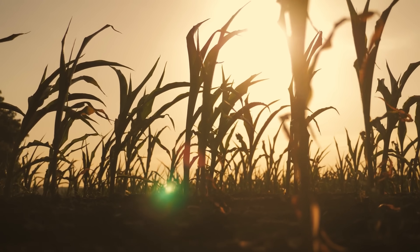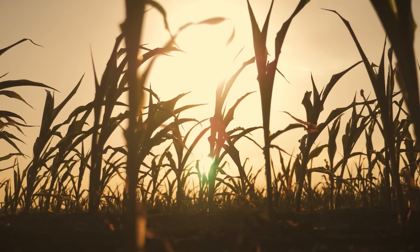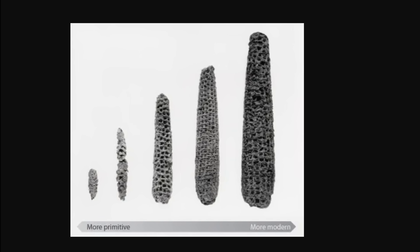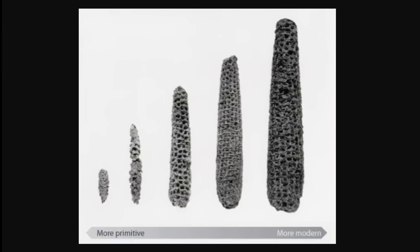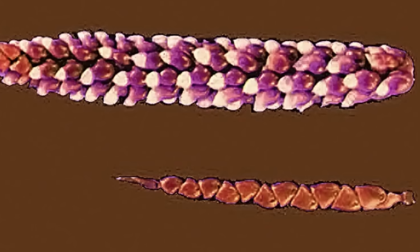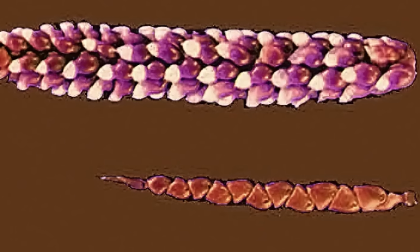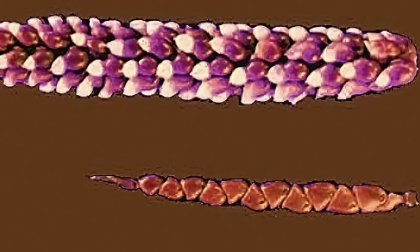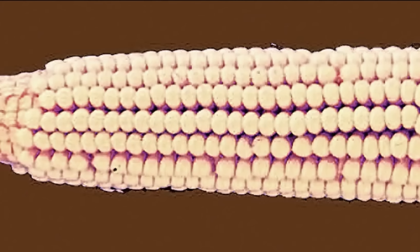Something very similar happened with corn, considered one of the greatest feats of artificial selection. Early Native Americans transformed a wild grass known as Teosinte — originally from Central Mexico — into the corn we know today through deliberate selection over generations. Something that once had tiny kernels protected by hard casing and long branching stems has been bred into a plant with an extremely large cob, exposed kernels, and very short lateral branches.